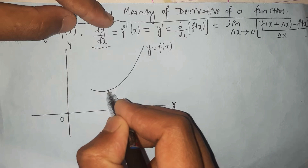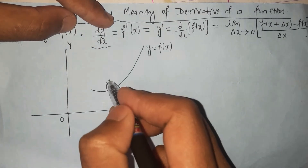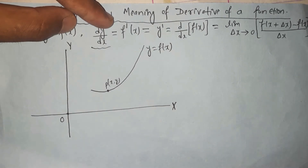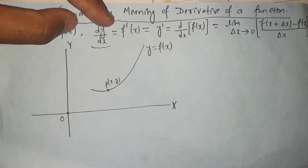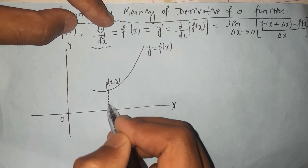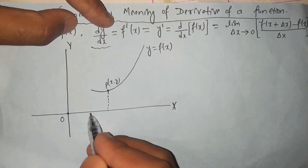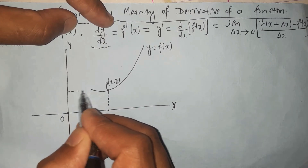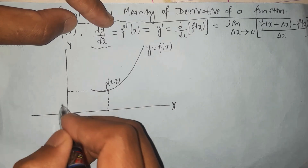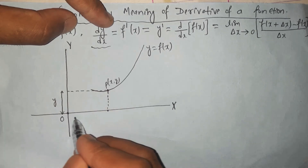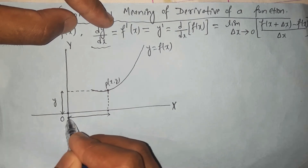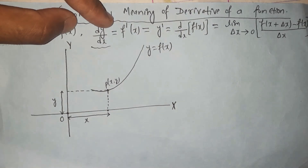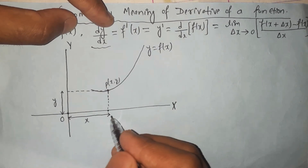In this graph, let's take a point — let's say this is the point P, and it has the coordinate (x, y) in the Cartesian coordinate format. This horizontal distance from the origin to this point is just x, and this vertical distance is just y. So we take a point P on the curve with coordinate (x, y).